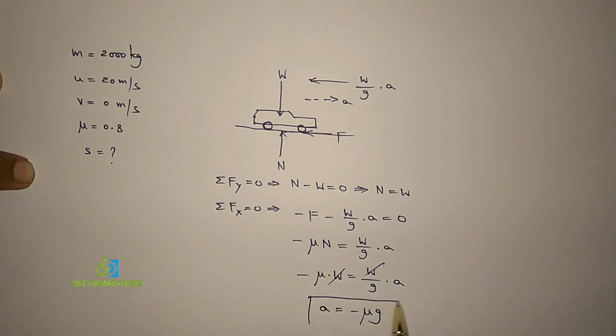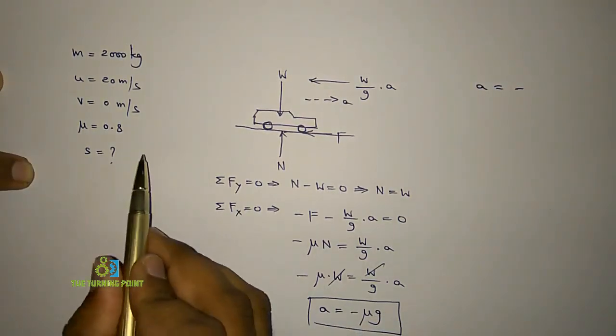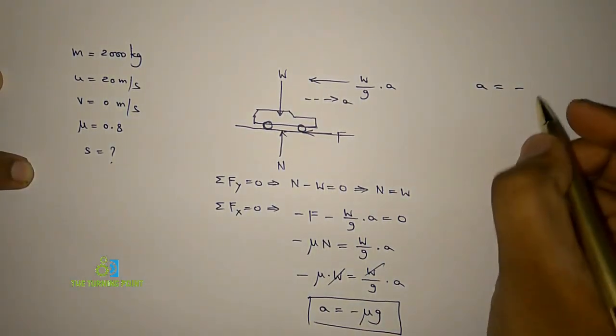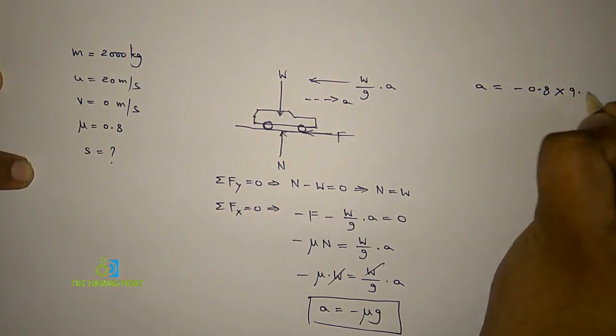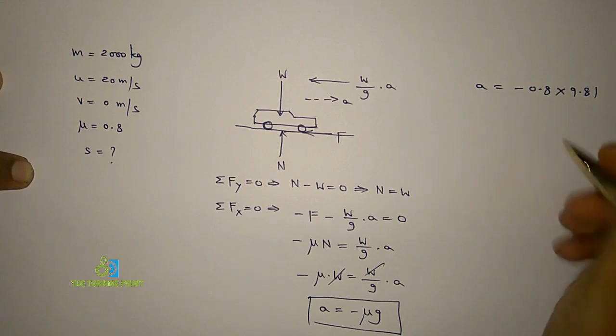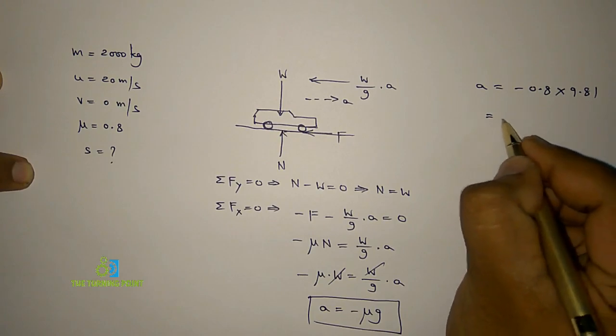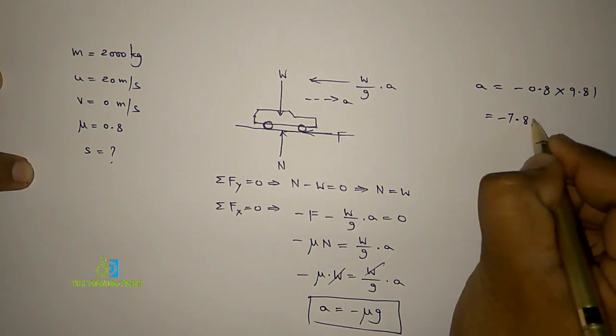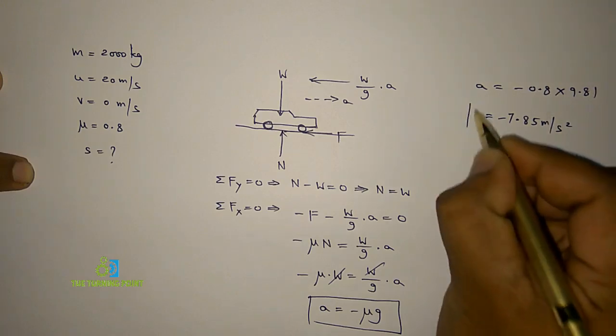In order to find acceleration, you can use this relation: a = -μg. So a equals minus, the coefficient of friction is given as 0.8, so -0.8 times acceleration due to gravity, which is 9.81. From this, you can calculate the value of acceleration. That will be around -7.85 meters per second squared. This is the value of acceleration.